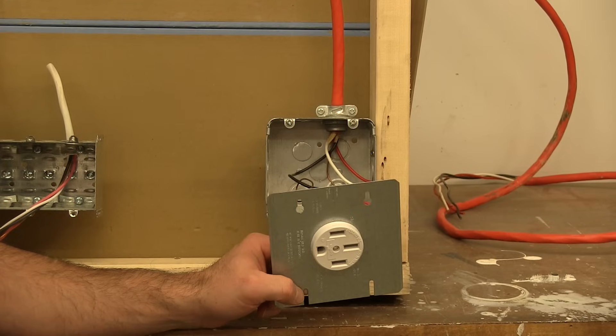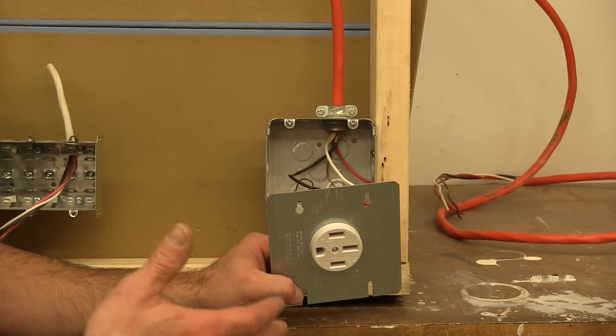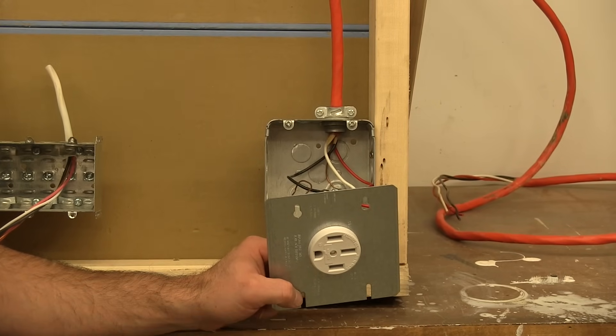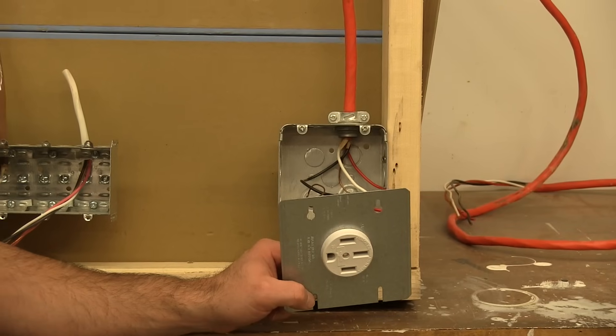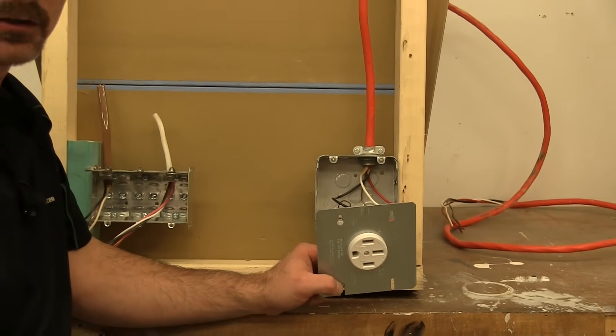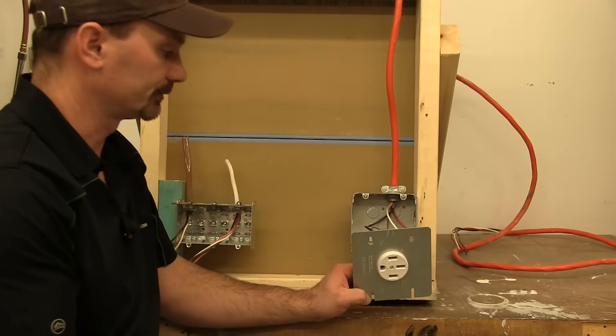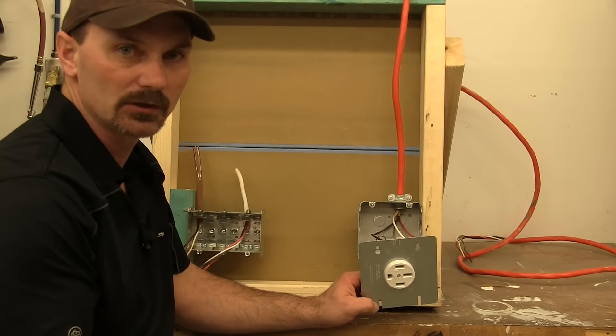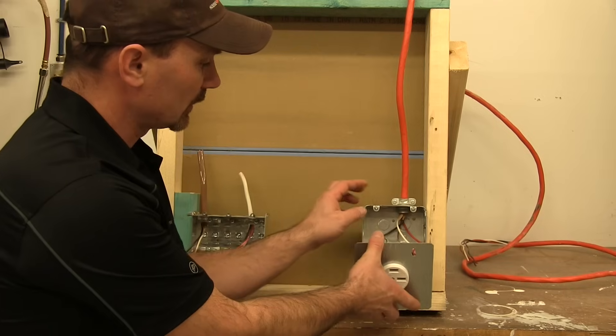So they're 240 volt. This is because they've got items in the stove that'll run on 240 like the elements and that sort of thing, but they also still need 120 volt supply to things like the timer and the clock.